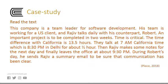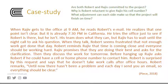Then Rajiv makes some notes for the next day and finally leaves the office at about 9:30 p.m. During Robert's day, he sends Rajiv a summary email to be sure that communication has been clear. When Rajiv gets to the office at 9 a.m., he reads Robert's email. He realizes that one point isn't clear, but it is already 7:30 p.m. in California. He tries the office just to see if Robert is there, but he isn't.